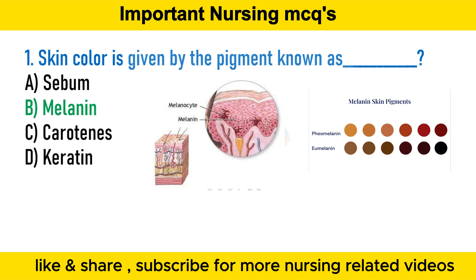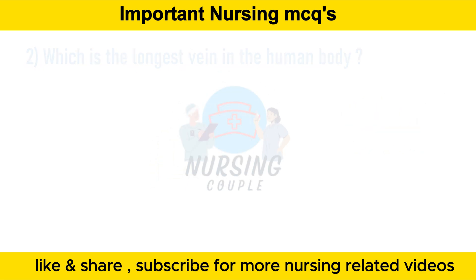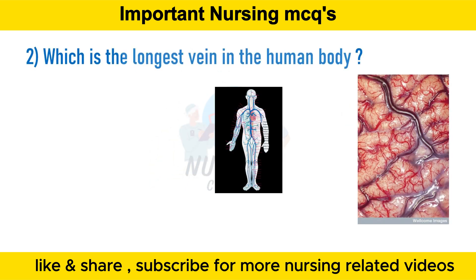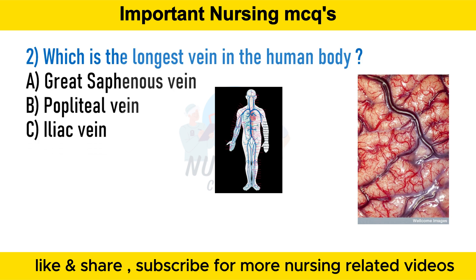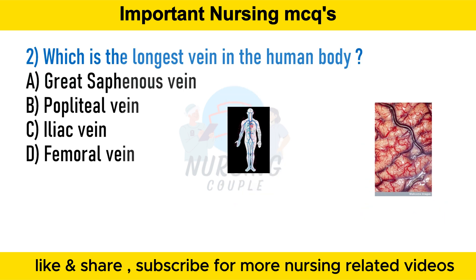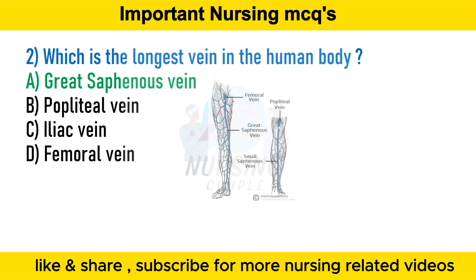Melanin deficiency is linked to a number of skin disorders and health conditions, some of these are vitiligo, albinism, and melasma. Which is the longest vein in the human body? Option A the great saphenous vein, option B the popliteal vein, option C the iliac vein, option D the femoral vein. The answer is option A, the great saphenous vein.